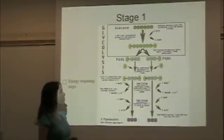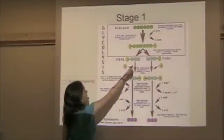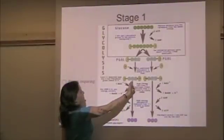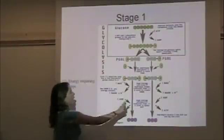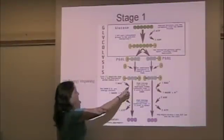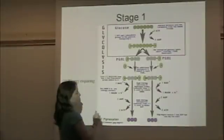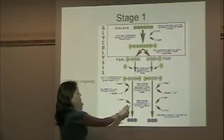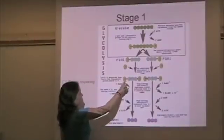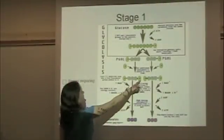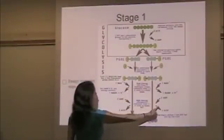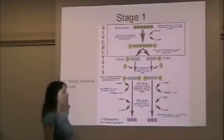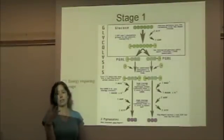Now we have the energy releasing steps. An additional phosphate adds to the other end, which increases the stability of the molecule — so now we have a three-carbon molecule with a phosphate on either end. NAD+ comes in and grabs a hydrogen forming NADH, and that happens to both molecules. Then four ADP come in and each grabs a phosphate, making a total of four ATP molecules.